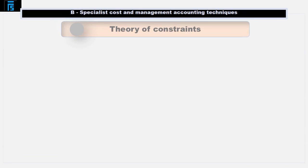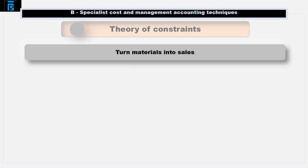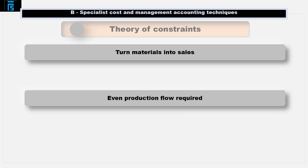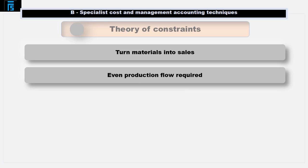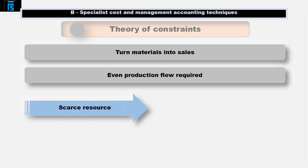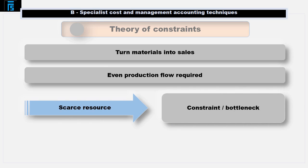Let's start by looking at the theory of constraints, which was formulated by Goldratt and Cox in 1986. The principle is that a business wants to turn materials into sales as soon as possible, to maximise the cash generated from those sales, and as a result an even production flow is required. If we want to maximise profitability, we want to ensure that we maximise our output of all profitable products, but sometimes there is a scarce resource or other factor that limits our output levels. We call this the constraint or bottleneck.